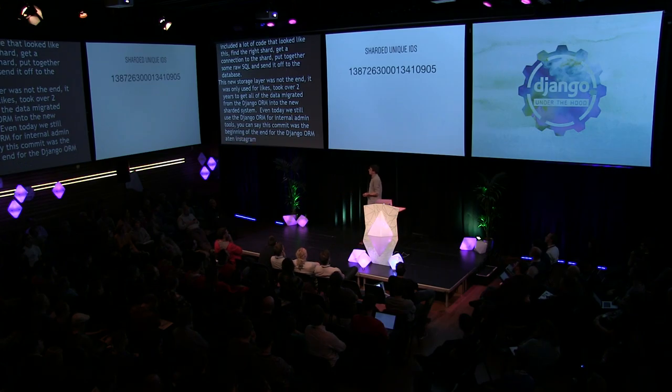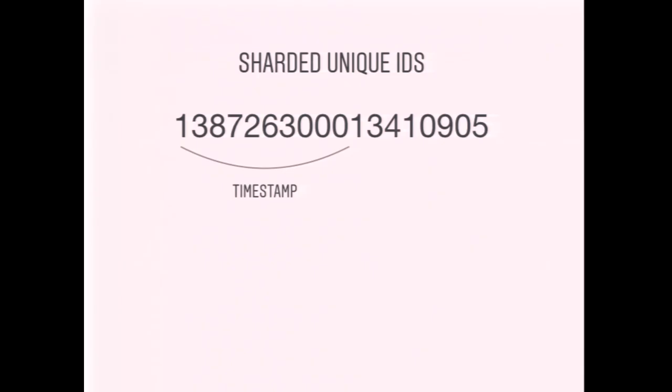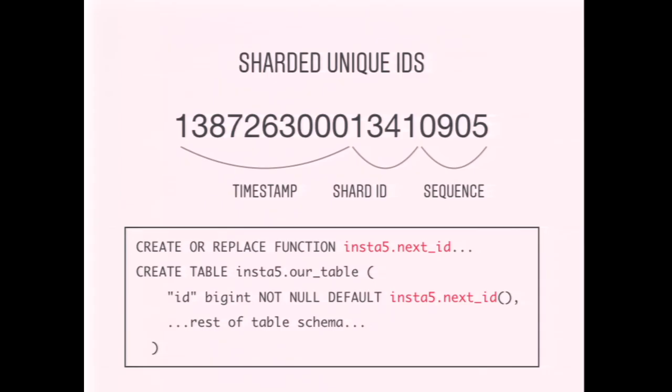Instagram engineers at the time came up with a scheme for sharded unique IDs that's been much replicated since. With sharding, you can no longer rely on a simple database sequence to generate object IDs — each database will have its own sequence and you'll get clashes. The scheme Instagram settled on begins with a timestamp, then a unique ID for the shard, then a unique sequence ID. This gives unique IDs that also preserve chronological ordering when sorted, and it can be implemented in Postgres as a stored procedure usable as a default for the ID field.